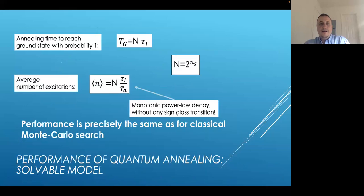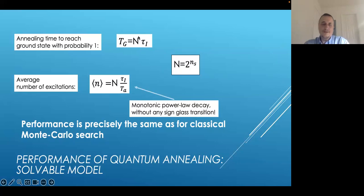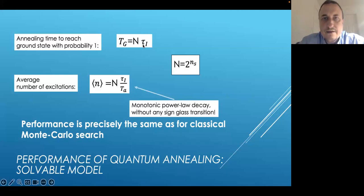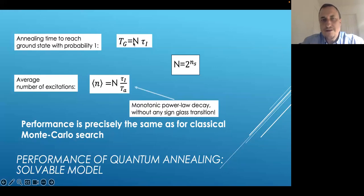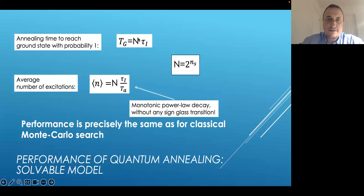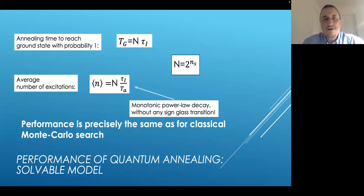Our results were somewhat disappointing. The condition to find the ground state with probability one in this protocol for most complex problems was found to be linearly proportional to the size of the phase space — basically the number of possibilities through which we search. Time is given by N times some characteristic time, which is just the inverse bandwidth of the Hamiltonian. This result is purely classical: to find the ground state of the Ising spin Hamiltonian, no matter how complex, we need time proportional to the size of the phase space — the same as for classical Monte Carlo random search.